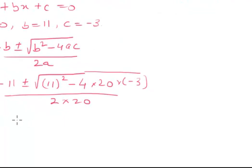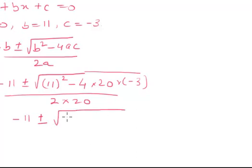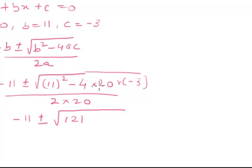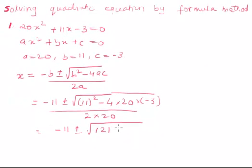So the value becomes minus 11 plus or minus under root of 11 squared, which is 121. Now 4 times 3 is 12, and 12 times 2 is 24. Minus times minus gives plus.